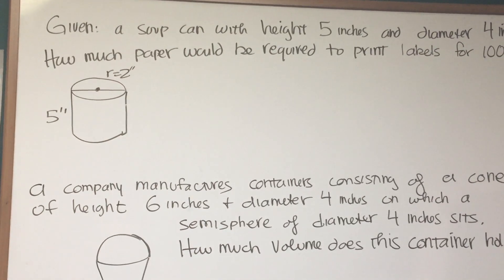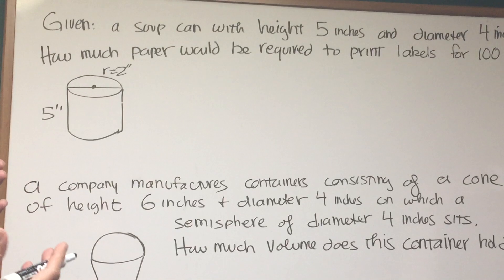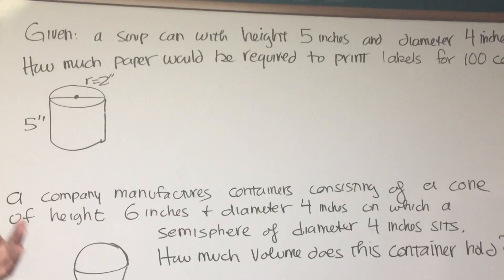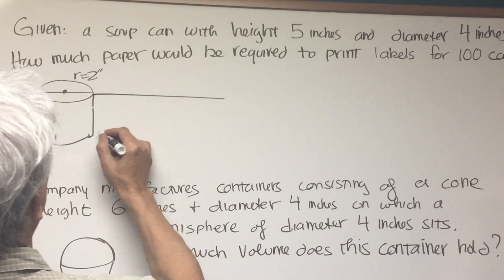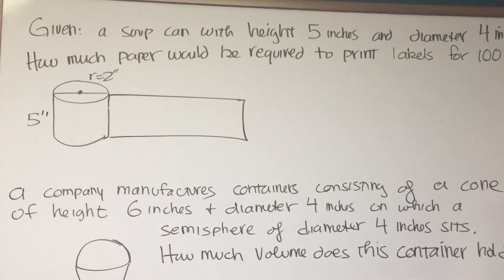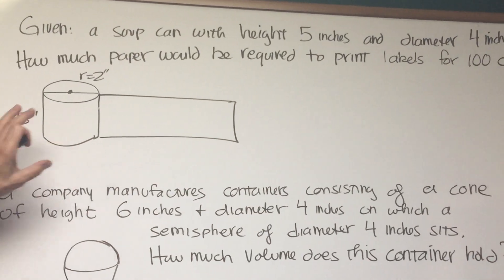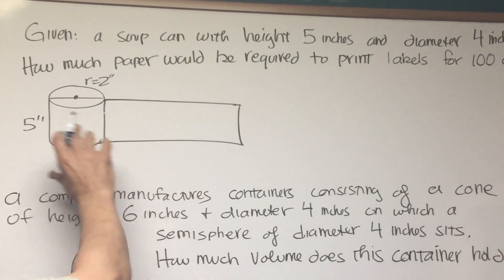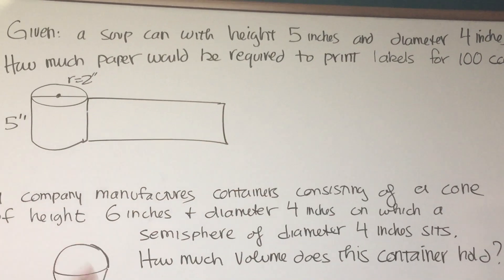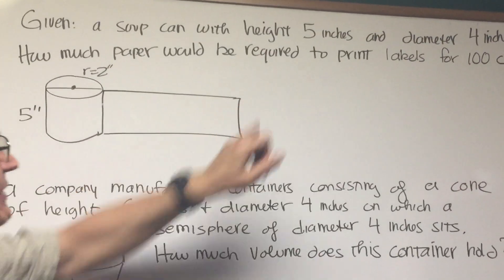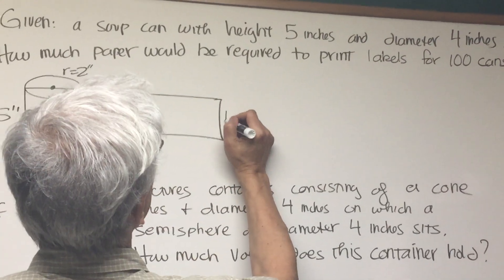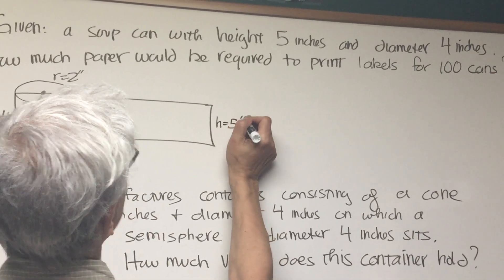So therefore we want to find out what kind of area do we need, how much paper do we need for the soup can label? Well if we unfold the soup can label, what do we have? We stretch it out, it turns out to be a rectangle. We know the area of a rectangle is base times height. We know the height is 5 inches, right? Height is equal to 5 inches.